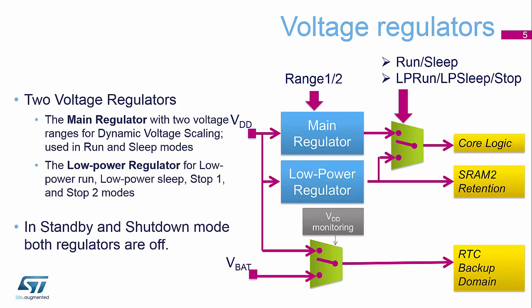Inside the device we have two voltage regulators. The main voltage regulator powers everything for maximum performance. The low power regulator is used in low power run, low power sleep, and the stop modes. When you get down to standby and shutdown mode, both regulators are switched off. This is where some of the extra wake-up time comes from — we have to wait for the regulator to power up and stabilize.